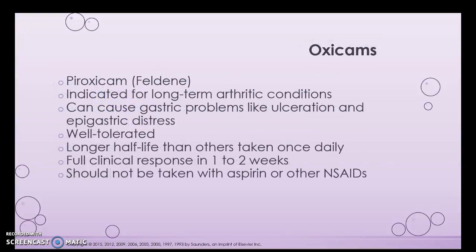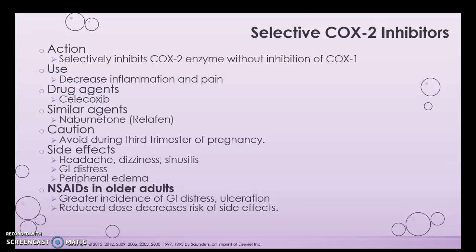Some of the other listed medications aren't needed for testing this week, but you are going to need them eventually. There are the COX-2 inhibitors — this one skips the COX-1 enzyme, so the stomach could still be protected since I'm not inhibiting that one. However, I actually don't see this used very often. Side effects still include GI distress. In older adults, there's a greater incidence of GI distress and ulceration with NSAIDs; a reduced dose decreases the risk of side effects.